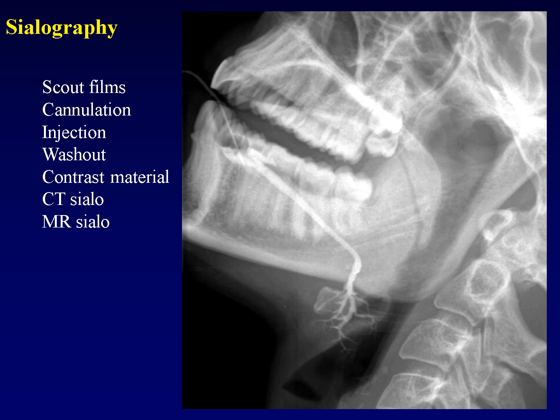To perform a sialogram, you begin with scout films of the face to ensure there are no visible calculi. Then you cannulate the duct of interest — either Stenson's duct or Wharton's duct — and inject iodinated contrast material in a retrograde fashion back into the gland. Originally, oil-based contrast agents were used, but water-based agents are much more available and produce decent images. After imaging, a washout is performed: the patient is given a sialogogue, usually lemon juice, which causes the glands to contract and expel the contrast.